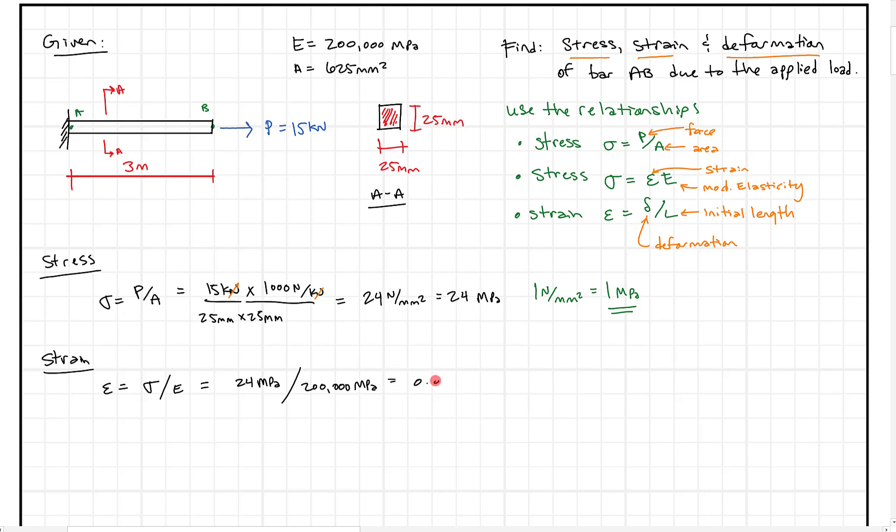Okay, it's very small. It's 0.00012. Sometimes it's written as millimeters per millimeter or meter per meter. But essentially, this is a unitless measure, right? Because the millimeters cancel out, okay? And it's kind of normalized if we think of it this way. We have delta or deformation divided by the initial length, okay? So this is our strain.